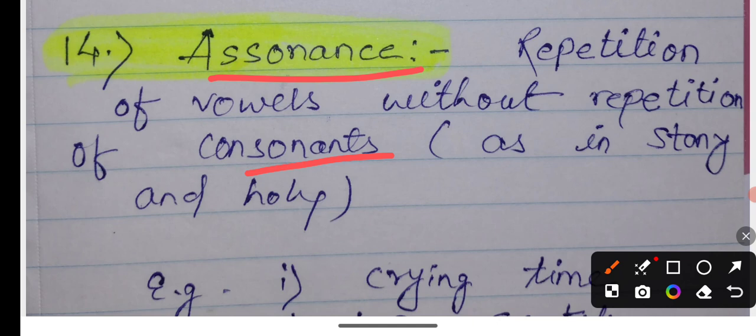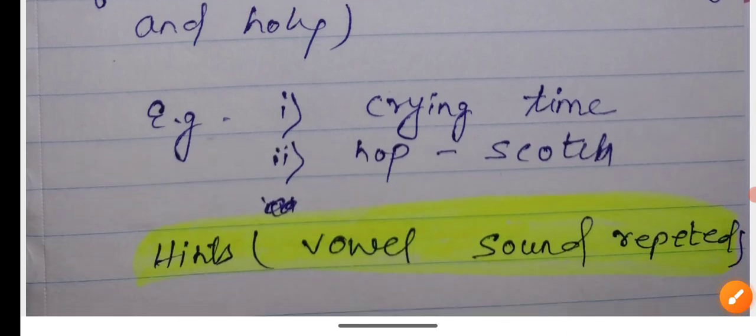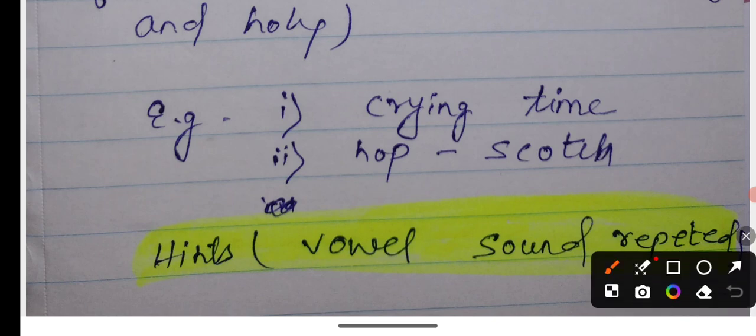This is a figure of speech. This one is assonance. What is assonance? It's crying time, half scotch. These types of words where vowel sounds are represented, the 'I' sound is represented, the 'O' sound is represented. This type of words where vowel sounds repeat, we can say assonance.